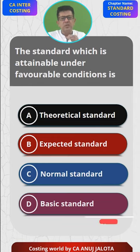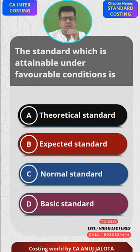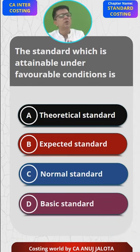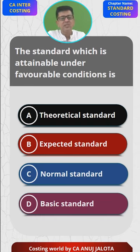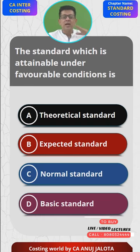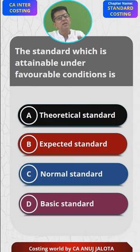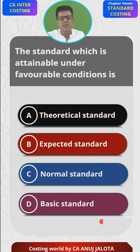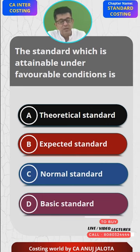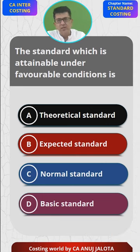Basic standard refers to standards which remain constant for a fairly long period of time. For example, if you select a base year — say three years ago I earned a profit of five crore rupees — you let that be your standard for the next few years. That is called basic standard; at least that much we have to be achieving.